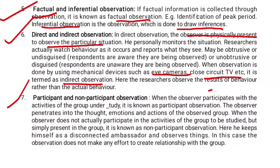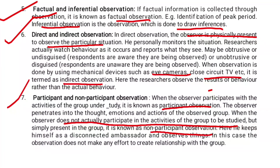When the observer participates in the group under study, it is known as participant observation. For example, if we study the behavior of a group of ten members, the researcher participates in that group. The observer penetrates into the thoughts, emotions, and actions of the observed group — that is participant observation.